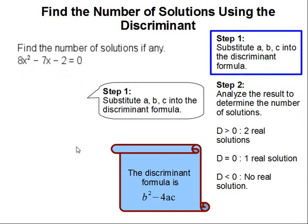Step 1: Substitute a, b, c into the discriminant formula. The discriminant formula is b squared minus 4ac.